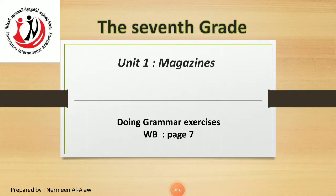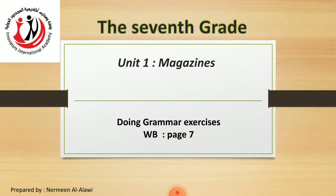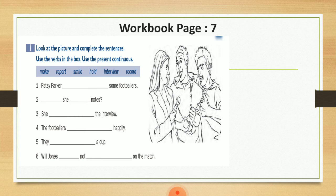Dear students of the 7th grade at the Innovators International Academy, today we are doing the grammar exercises at workbook page 7. I want you guys to open the book with me and write the answers. Let's start with exercise number one: look at the picture and complete the sentences. Use the verbs in the book and use the present continuous.